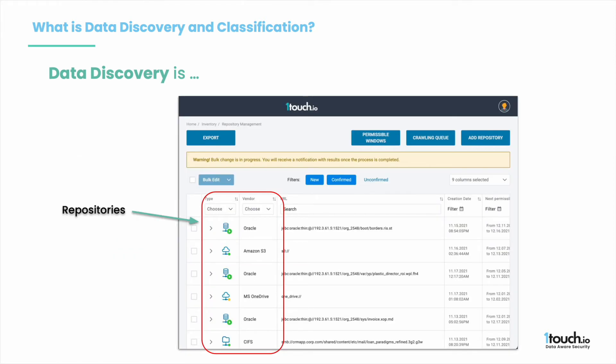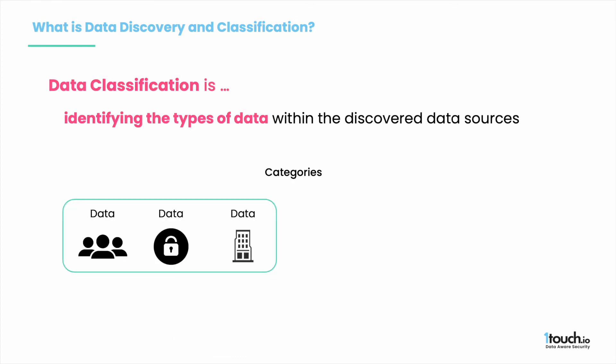In the next slide you can see what a list of repositories looks like in our discovery and classification program, which is called Inventor. There are a couple of Oracle databases, two cloud storage instances, and a shared folder.